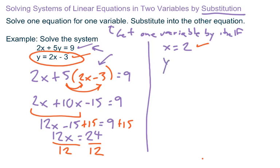So y is equal to 2 times, and then substituting the 2 for x, minus 3. y is equal to 4 minus 3. y is equal to 1.